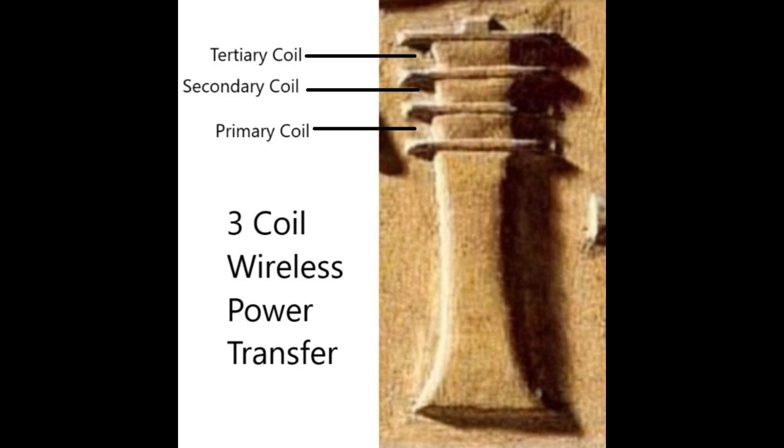The three-coil system can achieve high efficiency through resonant coupling between the primary, secondary, and tertiary coils without the need for a fourth coil. By minimizing the number of coils, the system can reduce energy losses associated with additional coupling stages.